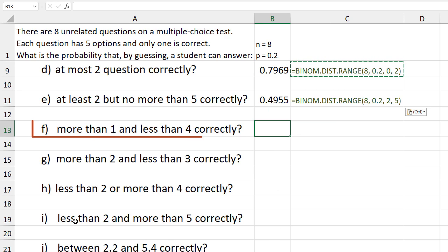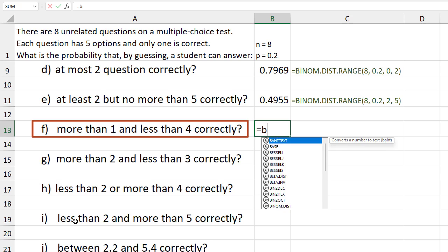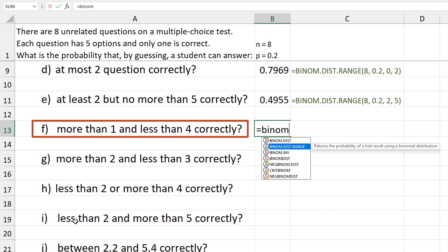Part f. For more than 1 and less than 4, only 2 and 3 are included. So we have a lower limit of 2 and an upper limit of 3.